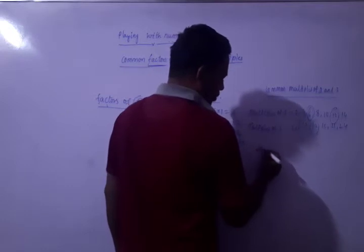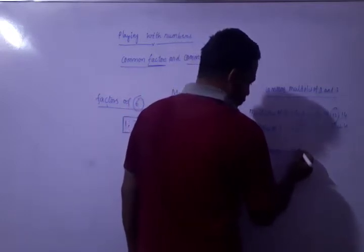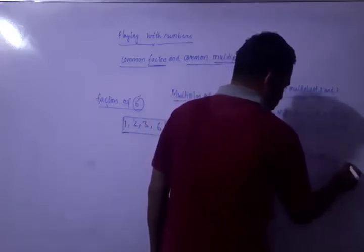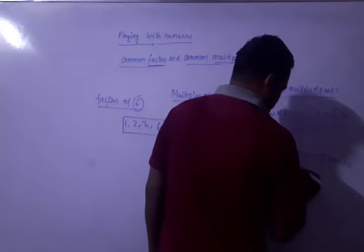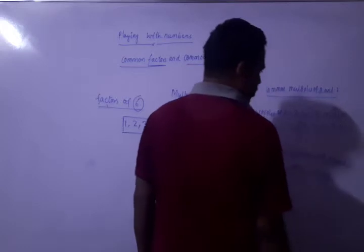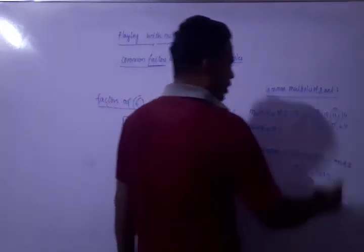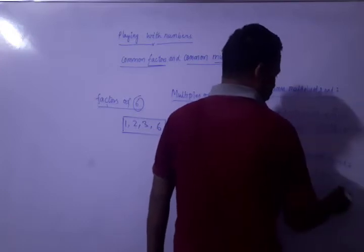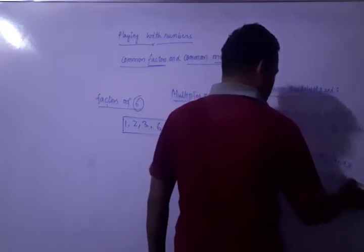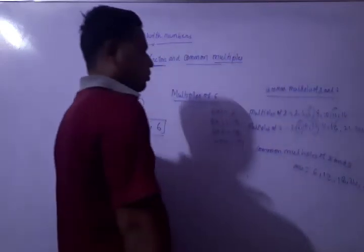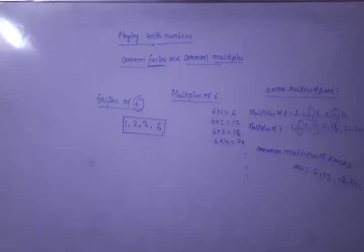Common multiples of 2 and 3 are 6, 12, 18, and when we move further, 24, 30 will come — in this manner we get the common multiples of 2 and 3.